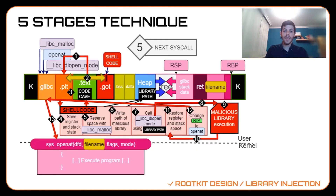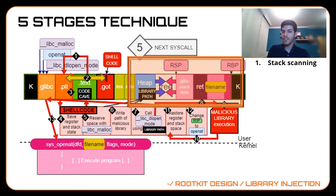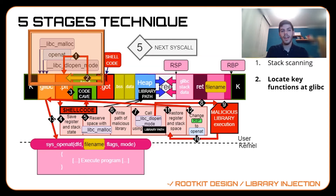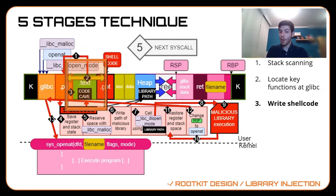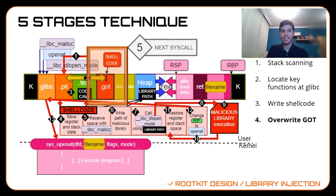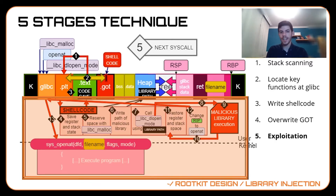We perform five different steps during this attack. First, we scan the stack using the reading helper at different offsets. Then we locate key functions at the glibc library. Next, we write our shellcode into a code cave. Afterwards, we overwrite the GOT section. And finally, we execute our shellcode to load the malicious library and then return execution back to the original process.